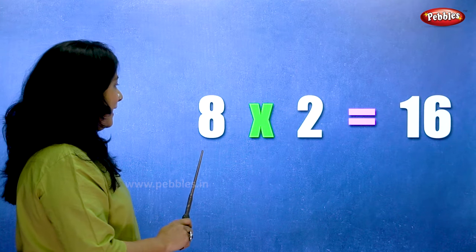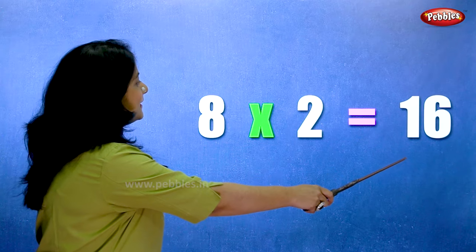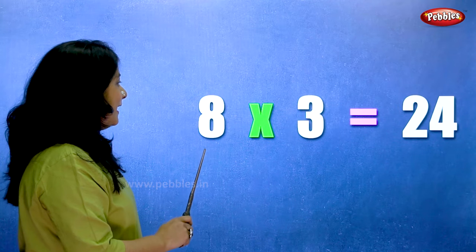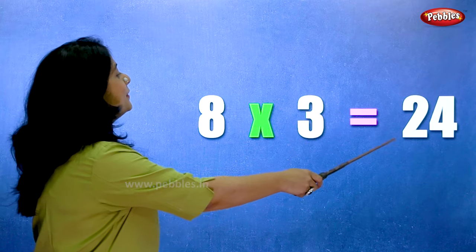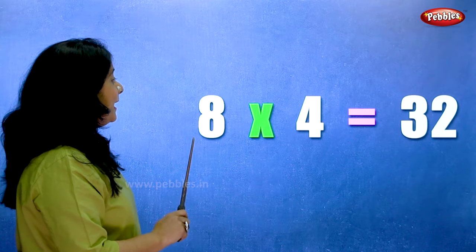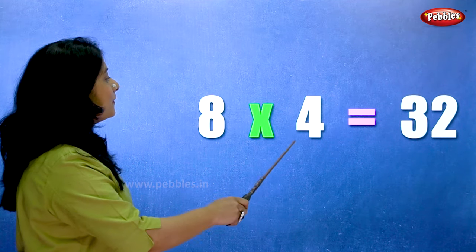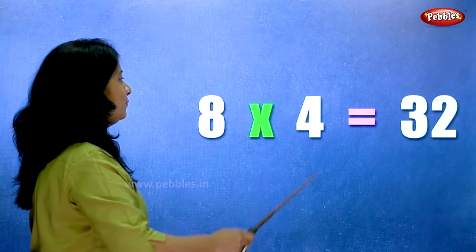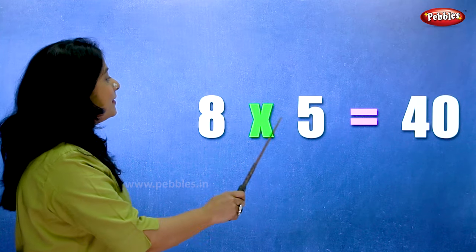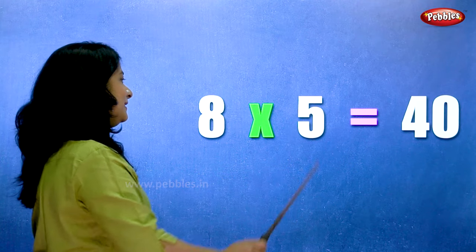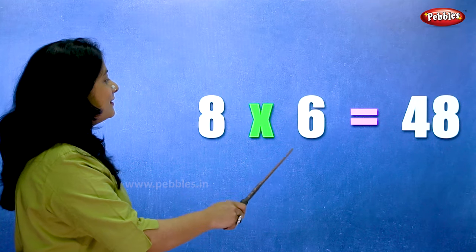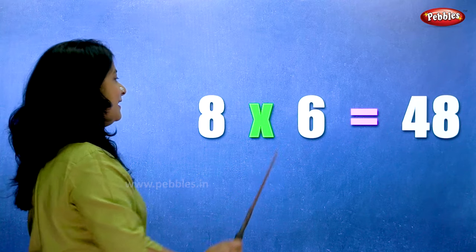8 2s are 16. 8 3s are 24. 8 4s are 32. 8 5s are 40. 8 6s are 48.